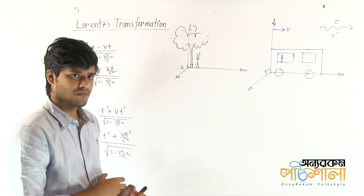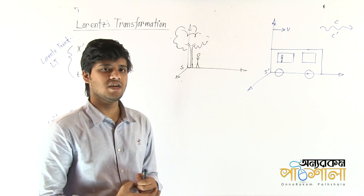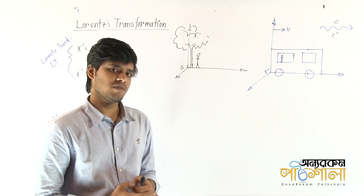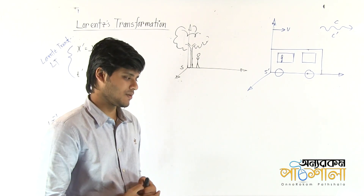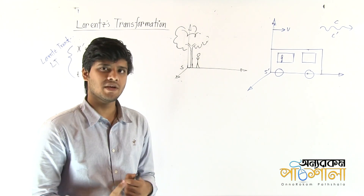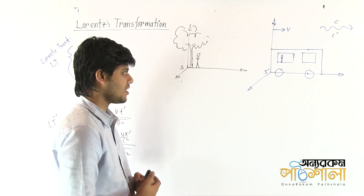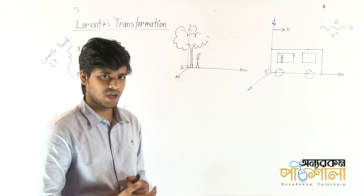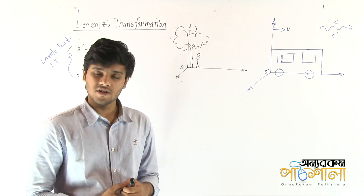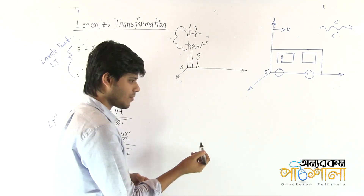If you do not have this transformation, then this transformation is the same way. We need to take a quick look at this. When we started to take a quick look at Lorentz transformation, we need to take a quick look at the Galilean transformation we have shown here.